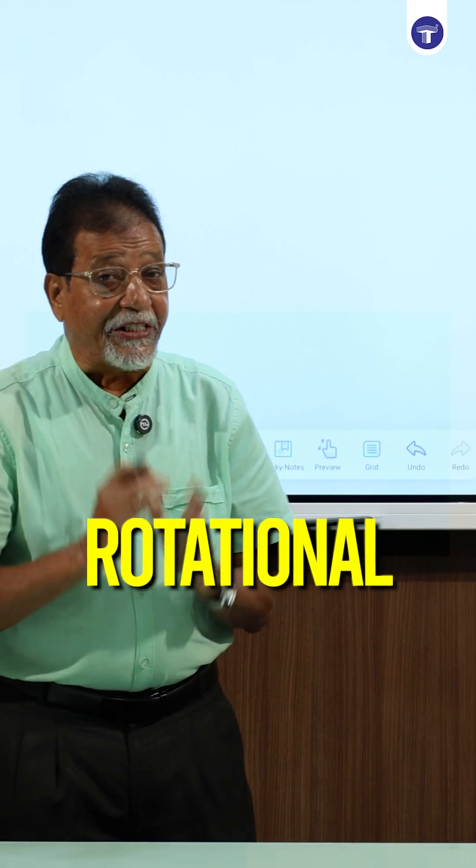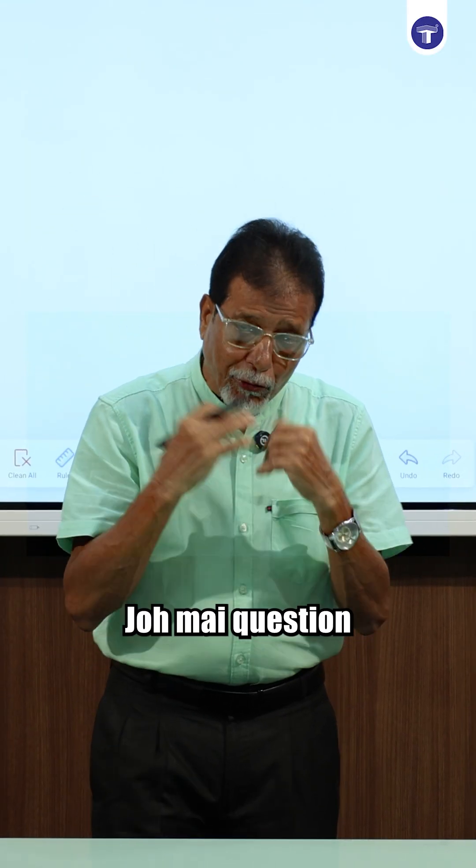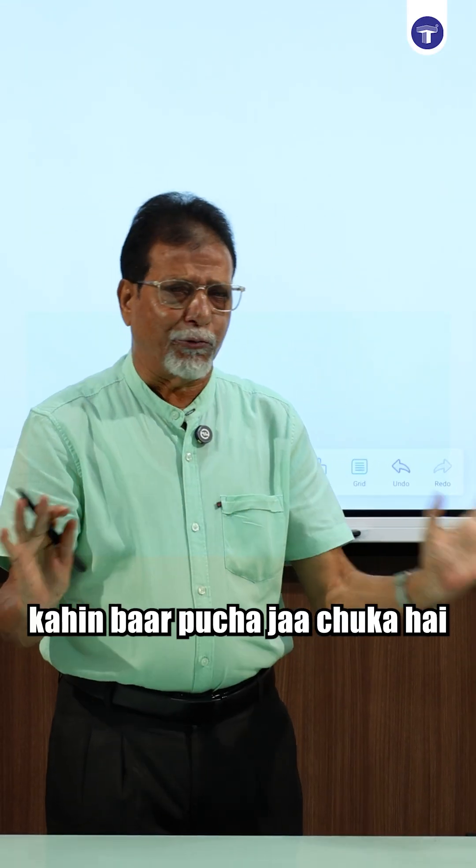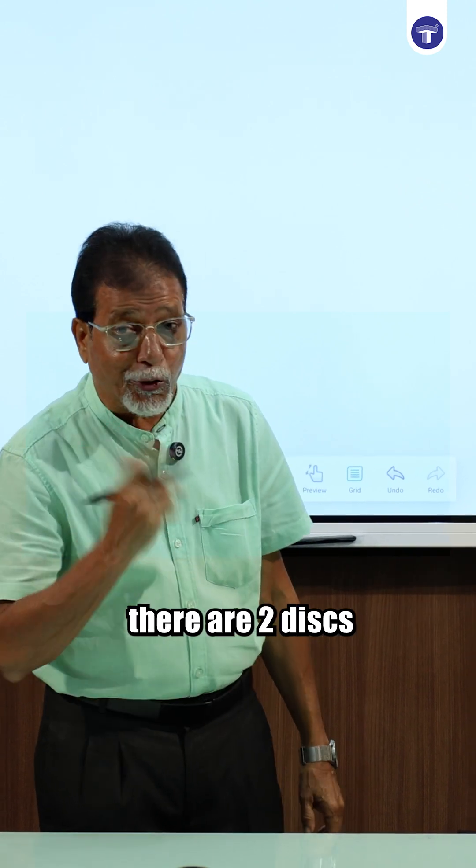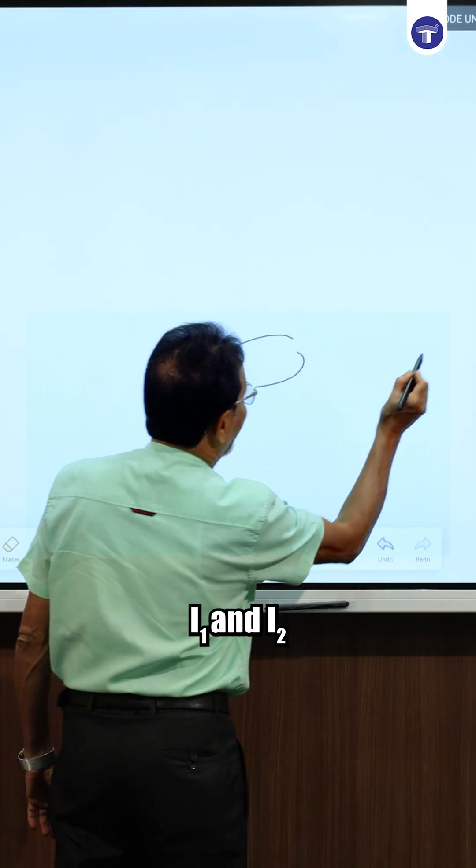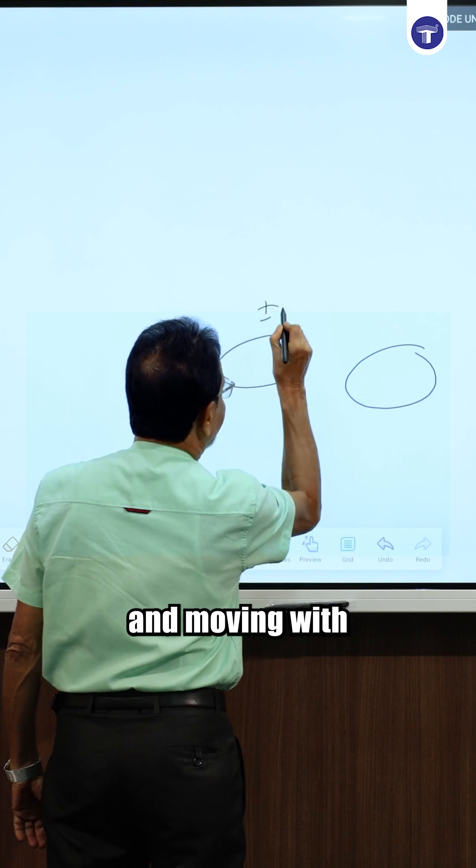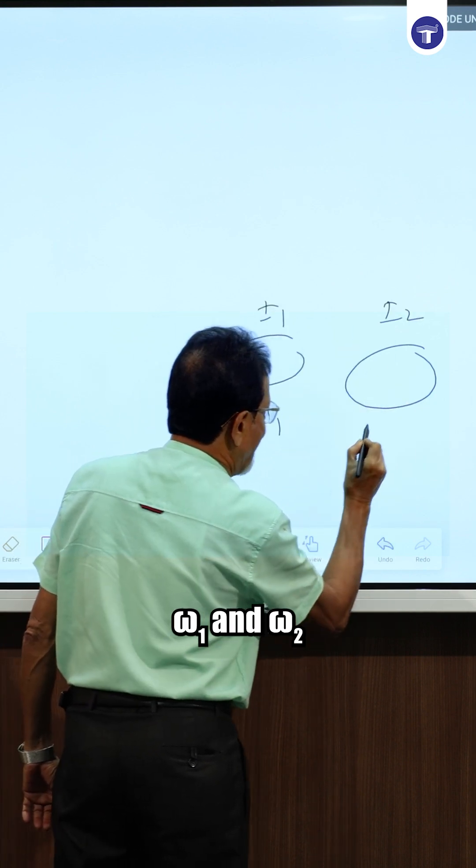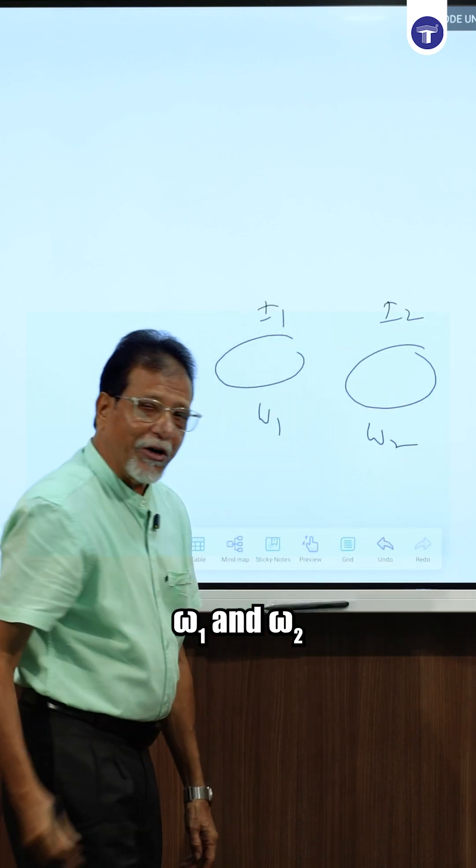Now I am taking a question from Rotational Dynamics. There are two discs having moment of inertia I₁ and I₂, moving with initial angular velocities Omega 1 and Omega 2 about their central axis.